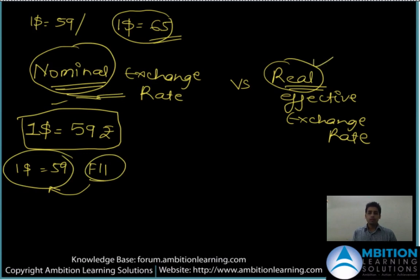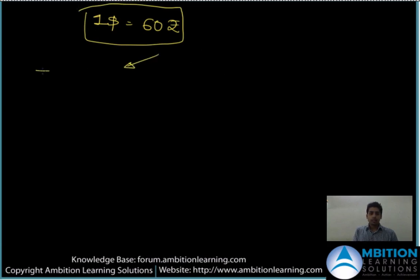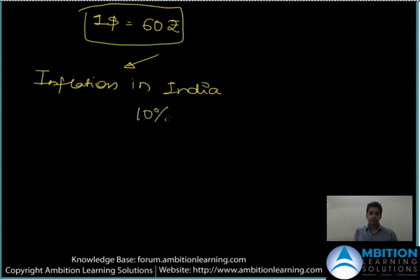All trades — when an FII comes into your country and sells one dollar, he receives 59 rupees — all these trades happen at the nominal rate because that's the market-driven rate. Now let's throw some light on what is the real effective rate. Today one dollar is quoting at 60 rupees — that's the nominal rate. Now let's talk about inflation in India.